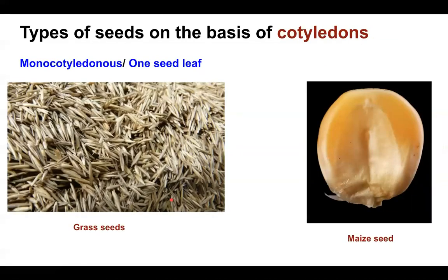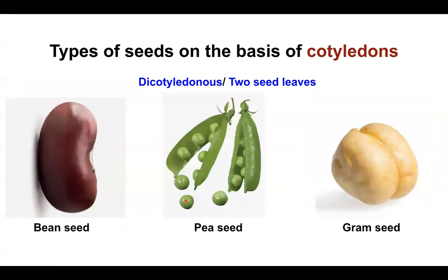Seeds can also be classified on the basis of cotyledons — whether they have one seed leaf or two seed leaves. Monocotyledonous seeds have only one single cotyledon, for example grass seed and maize seed. Dicotyledonous seeds have two cotyledons — bean, pea, and gram are all examples of dicotyledonous seeds.